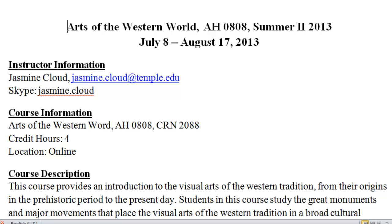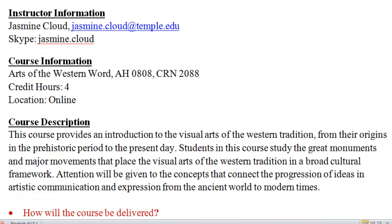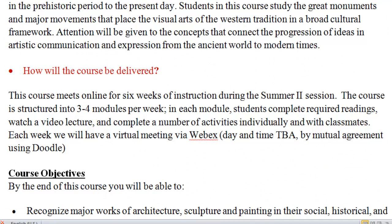As I said, you are getting four credit hours for this course. We will be holding everything online. For the most part, you will be doing work on your own, but we do also have some virtual meetings to take care of. The basis of this course is an introduction to the visual arts of the Western world. We're going to be focusing mostly on Europe and on North America, mostly the United States, looking at prehistory all the way to the present day. The course will be delivered online over the course of six weeks during the Summer 2 session. You have three to four modules per week, watching a video, conducting readings, and also doing a number of activities.